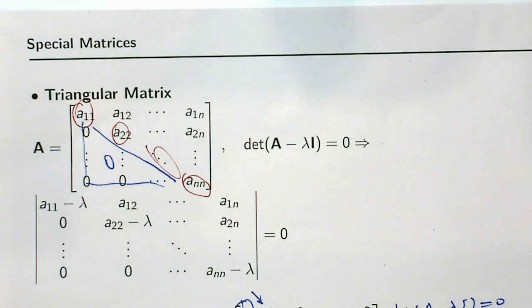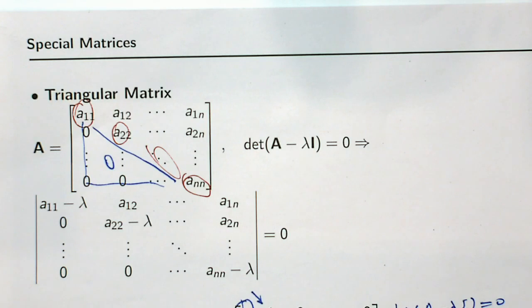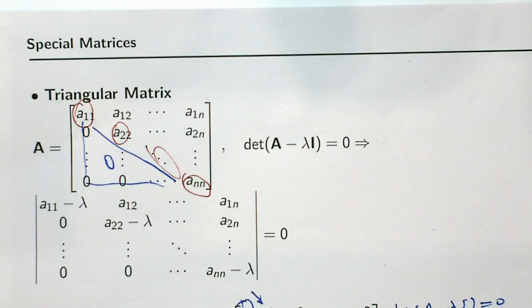This is a very important property: if we are able to reduce or reform a given matrix into an upper or lower triangular form, then we are done finding the eigenvalues — all elements on the main diagonal are the eigenvalues. So instead of calculating eigenvalues directly from the definition, one idea is to reshape the matrix into triangular form. This is exactly the main point of some numerical methods for computing eigenvalues.